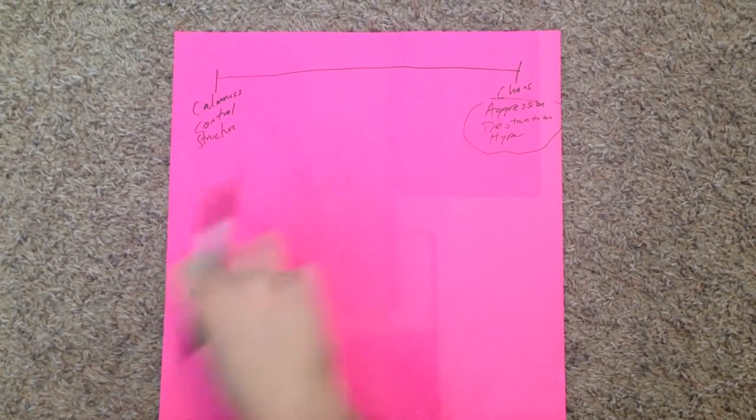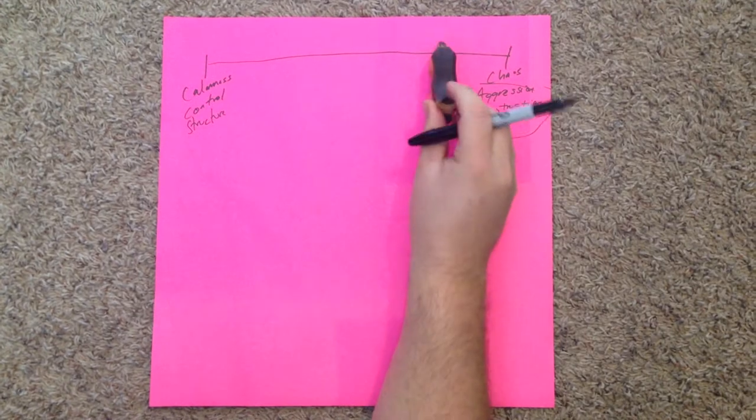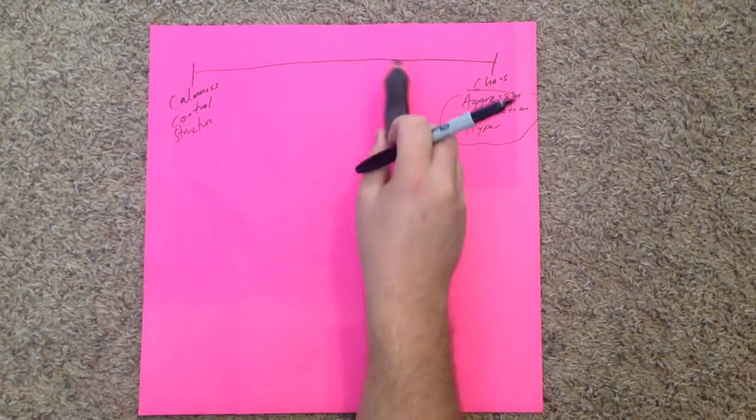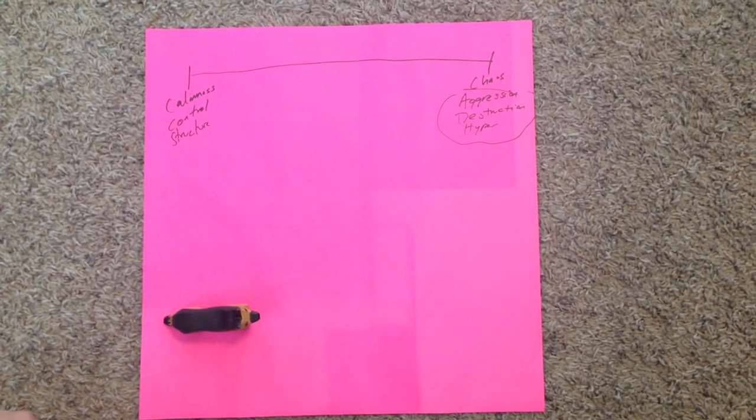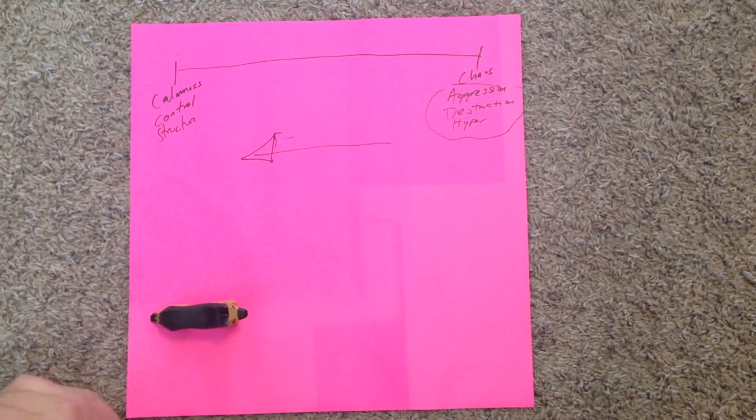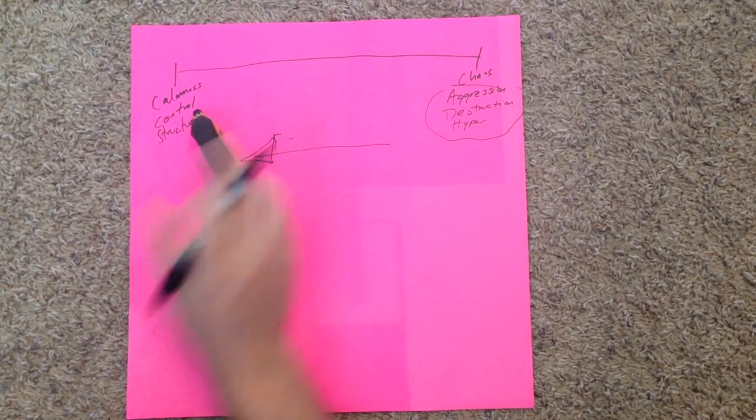And so when I explain this to people, most people get it. Okay, my dog is aggressive, he lives on this end of the spectrum. He's destructive, he lives on this end of the spectrum. Most people understand that, and so the question becomes, what can we do to push our dog to this end of the spectrum?